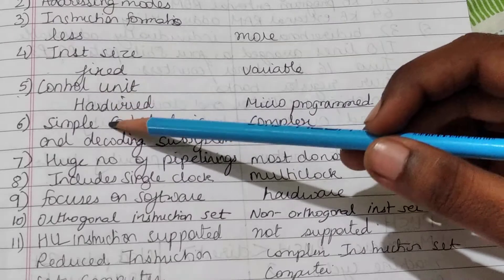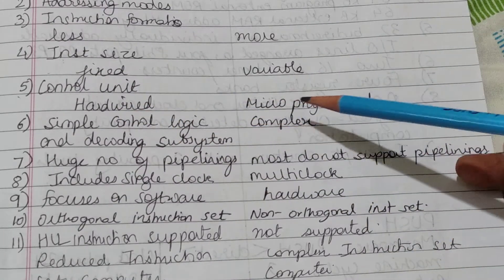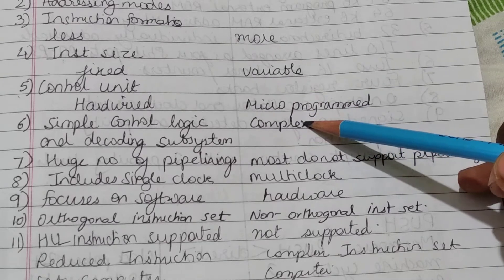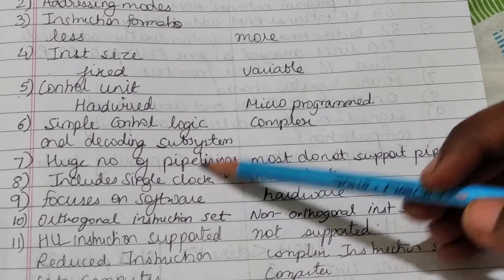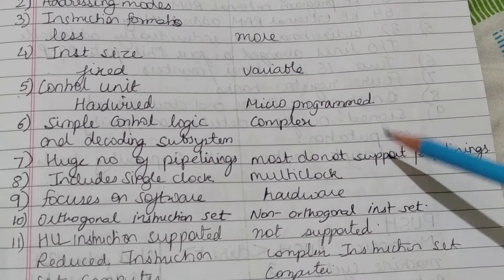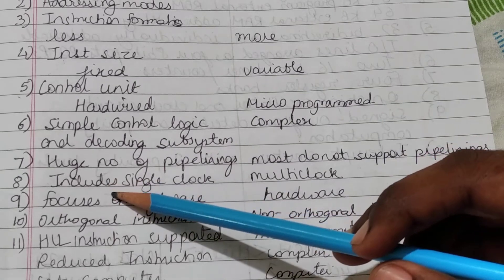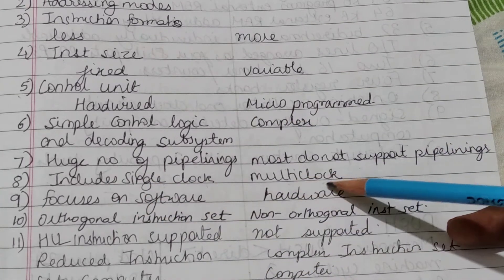RISC has simple control logic and decoding subsystem, but CISC has complex control logic. RISC has a huge number of pipelining stages, while CISC mostly does not support pipelining. RISC uses single clock cycles, but CISC has multi-clock cycles.